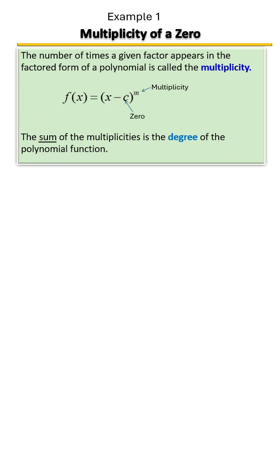The number of times a given factor appears in the factored form of a polynomial is called the multiplicity. The multiplicity is the exponent; it tells you how many times that zero appears. The sum of the multiplicities will give you the degree of the polynomial function.